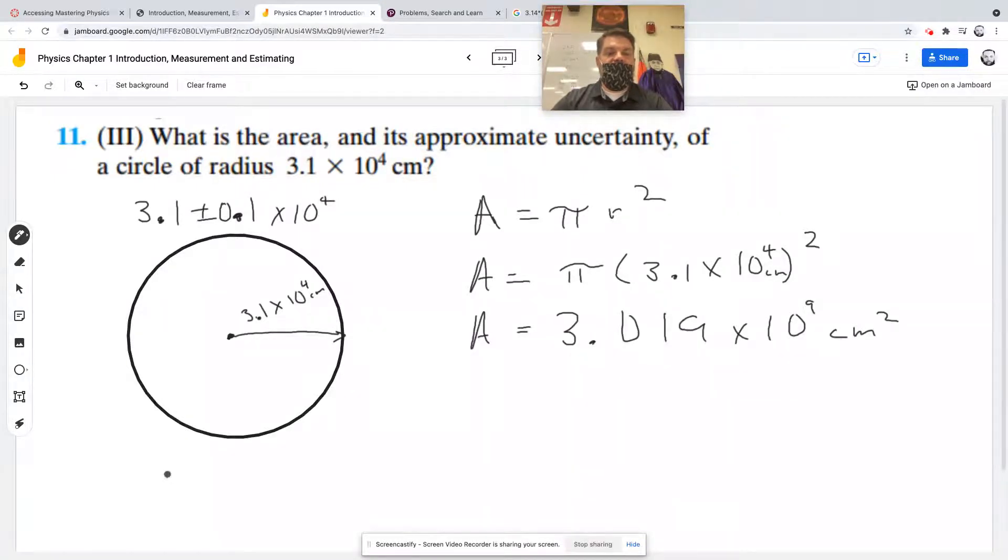So the radius could be 3.0 times 10 to the 4th if we subtract, or 3.2 times 10 to the 4th if we add. We're going to plug in both numbers. Let's do the minimum area first.